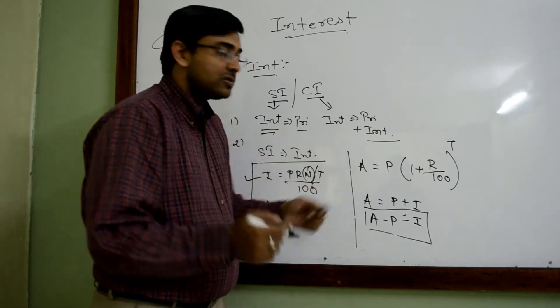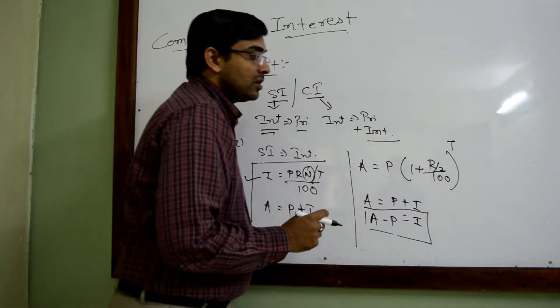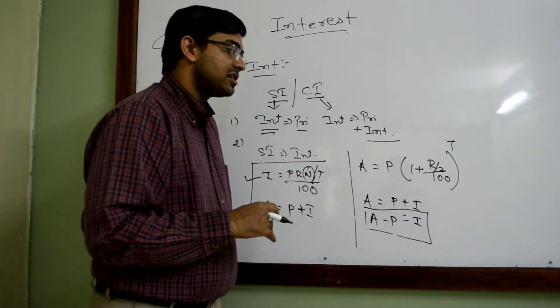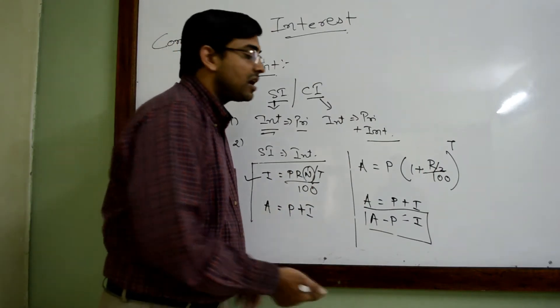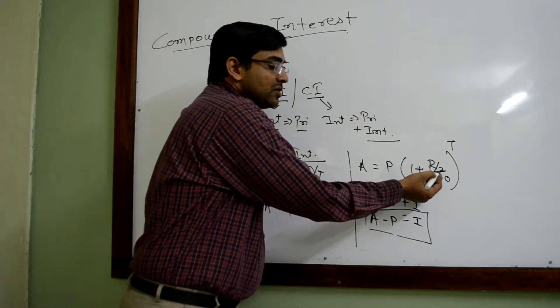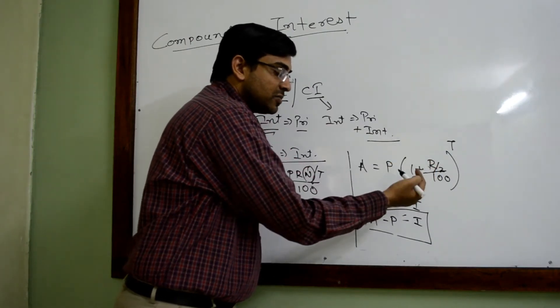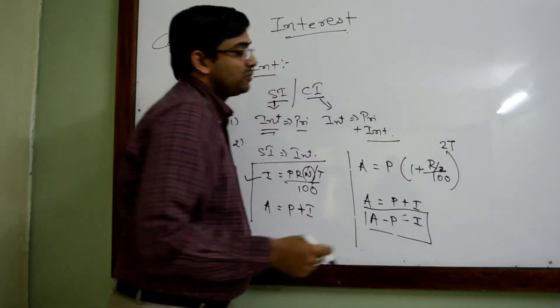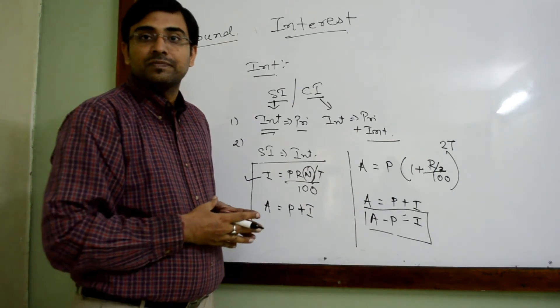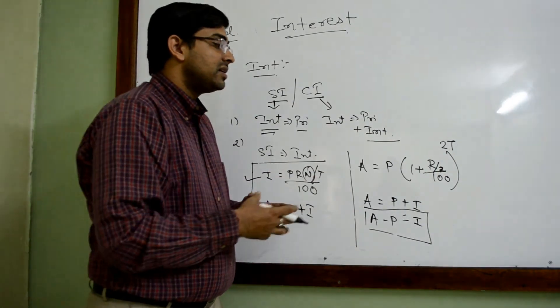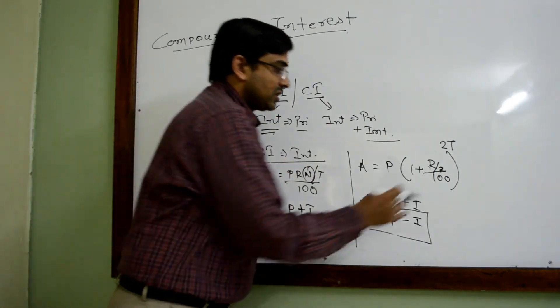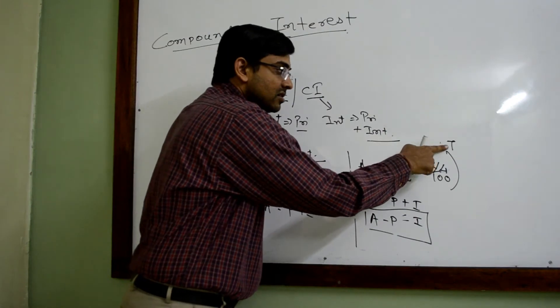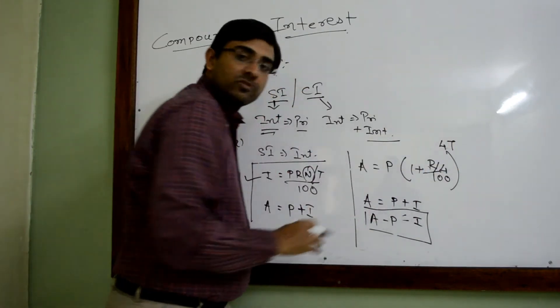Compounding can be quarterly, six monthly, or monthly also. Let us first look at six monthly. If it's a six monthly case, in one year if the rate applicable is R, then for six months the rate will be R by 2, and time will become 2T because in one year compounding happens twice. Then quarterly. How many quarters are there in one year? 4 quarters. So in this case it will become R by 4, and 2T will become 4T.